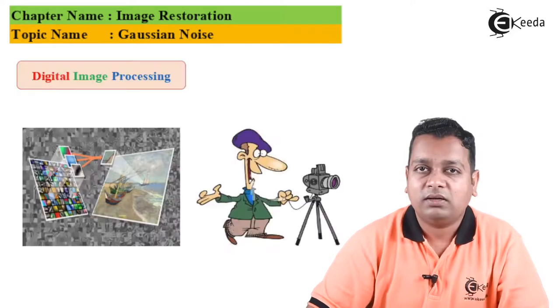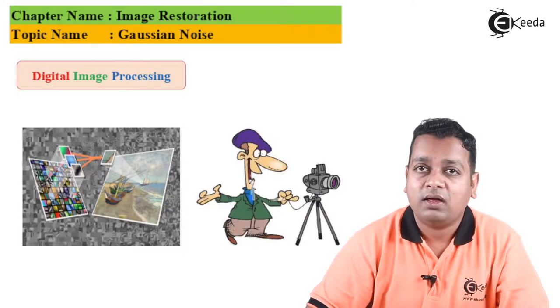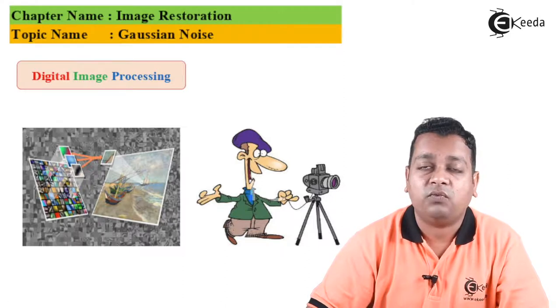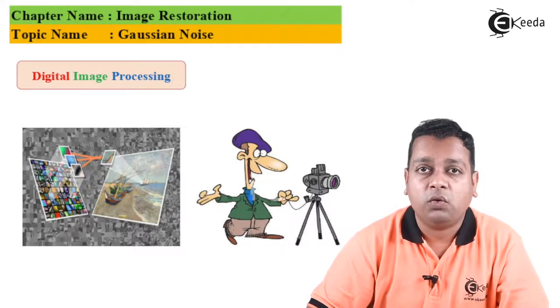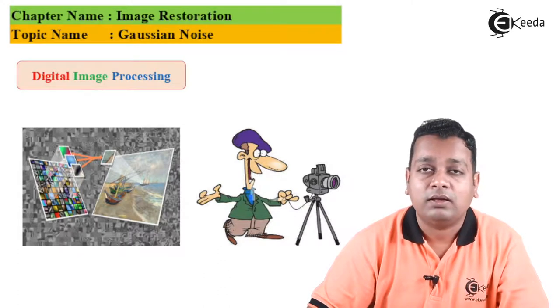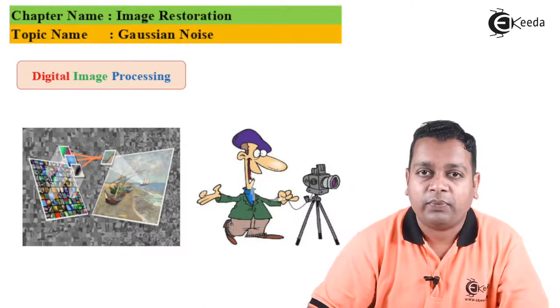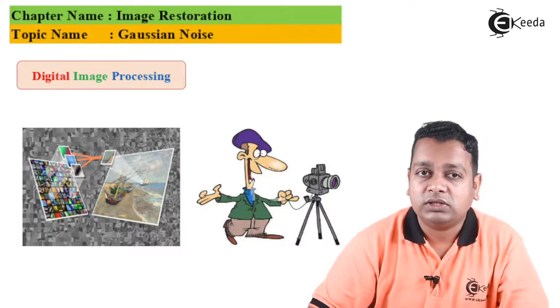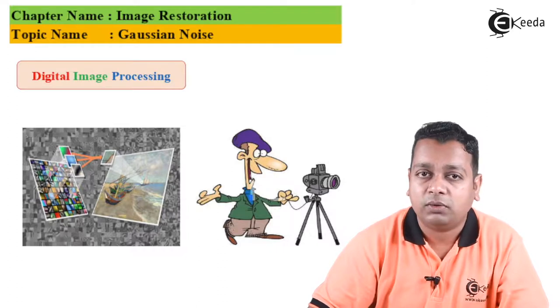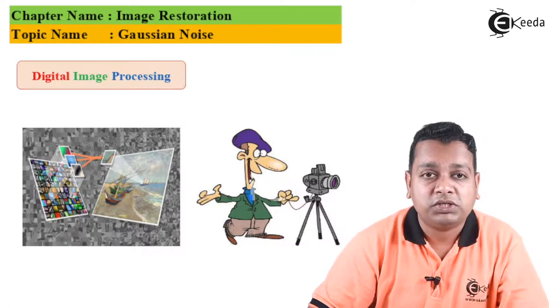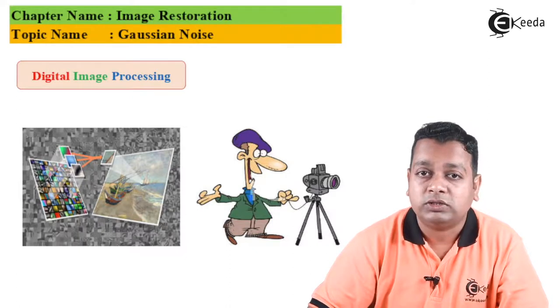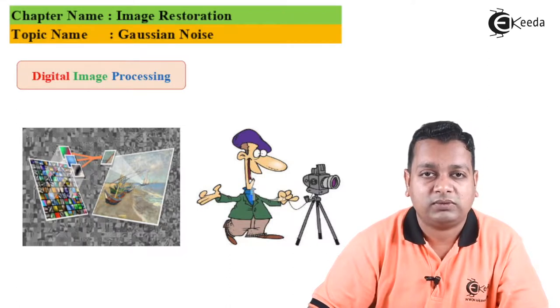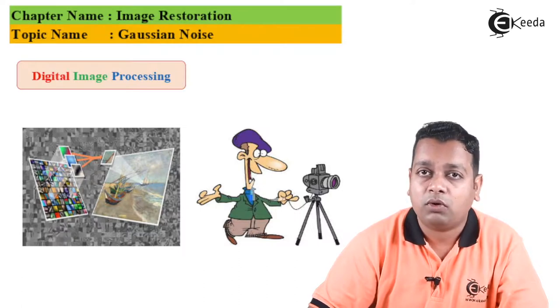Gaussian noise is very important and has wide application when we affect the original image with Gaussian noise and then carry out the image restoration process. Because of its mathematical tractability in both the spatial and frequency domains, the Gaussian, also called sometimes as normal noise model, is used frequently in practice.